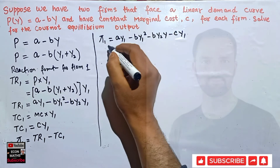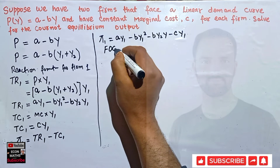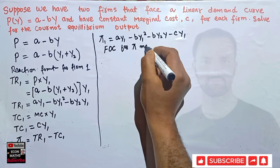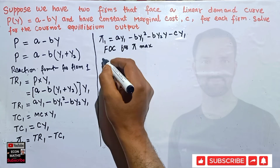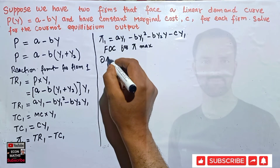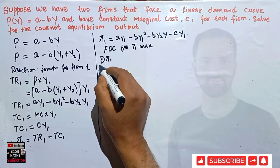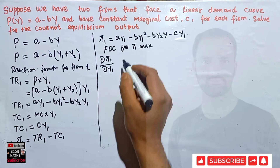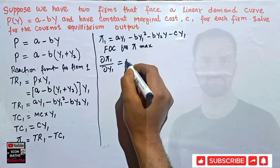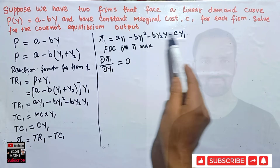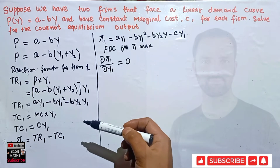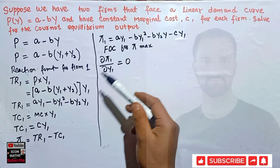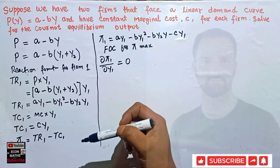The first-order condition for profit maximization requires that the derivative of the profit function with respect to Y1 — the quantity produced by firm one — be set equal to zero. So we take the partial derivative of π1 with respect to Y1 and set it equal to zero.